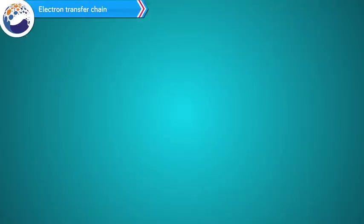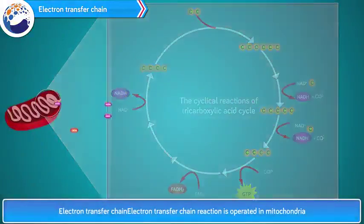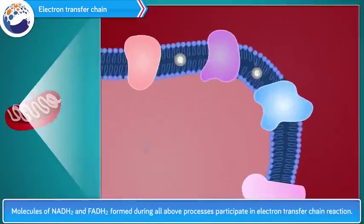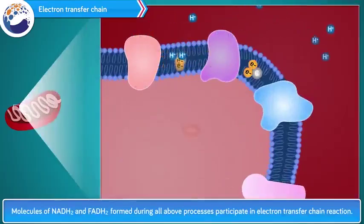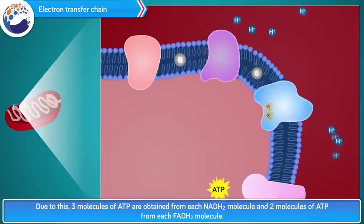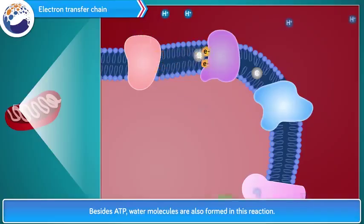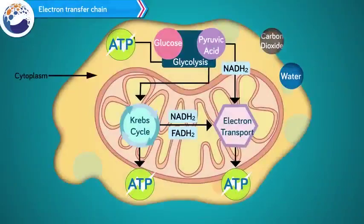Electron transfer chain reactions are operated in the mitochondria. Only molecules of NADH2 and FADH2 formed during all the above processes participate in the electron transfer chain reaction. Due to this, three molecules of ATP are obtained from each NADH2 molecule and two molecules of ATP from each FADH2 molecule. Besides ATP, water molecules are also formed in this reaction.